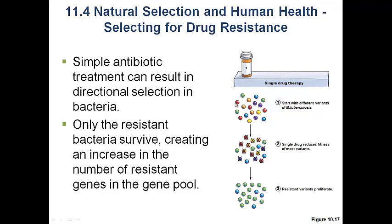The idea is very simple. We have many different genotypes and phenotypes of Mycobacterium tuberculosis — the bacterium that causes tuberculosis. We treat with antibiotics and see that most, but not all, of those phenotypes are destroyed. The ones that survive were already resistant to begin with. Now the whole population is resistant because the susceptible ones have been removed from the population. This is the idea of drug-resistant pathogens.